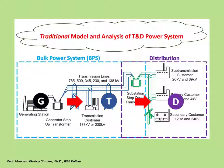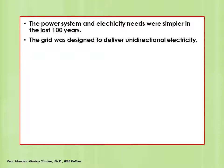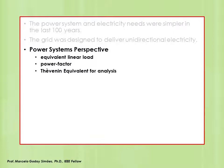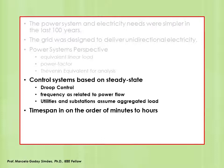A sustainable and smart electrical power grid is the reality of our 21st century. Because the original grid was designed to deliver unidirectional electricity, the needs were much simpler — it is possible to make analysis and design with equivalent linear loads and their required power factors. Control systems can be developed using steady-state analysis and Thevenin equivalent circuit evaluation. Utilities assume an operation of aggregated load, and the time span concerns seconds, minutes, and hours.